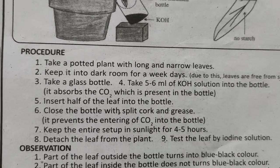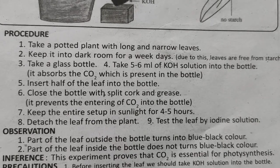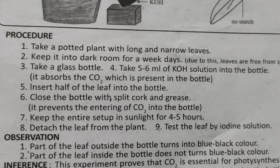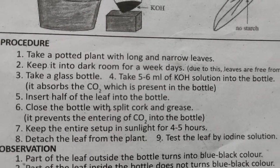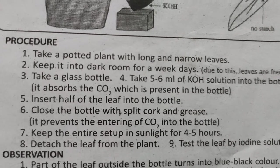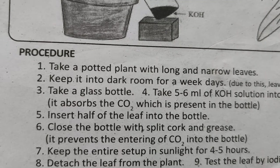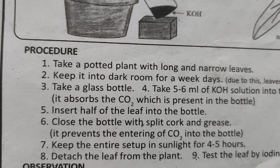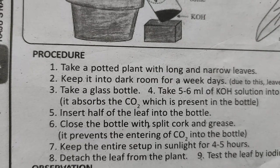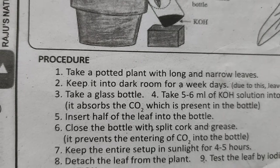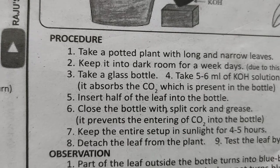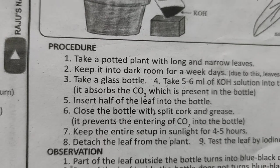Procedure: Take a potted plant with a long and narrow leaf. Keep it in a dark room for a week — this is important, as it destarchs the leaves. Take a glass bottle with 5–6 ml of KOH solution — KOH absorbs the carbon dioxide present in the bottle. Insert half of the leaf into the bottle, close the bottle with a split cork, and grease it so that half the leaf is inside and half is outside.